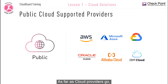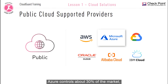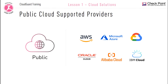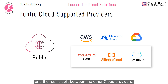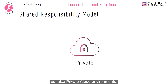As far as cloud providers go, AWS dominates 40% of the market, Azure controls about 30% of the market, Google has about 20%, and the rest is split between the other cloud providers. CloudGuard not only protects public cloud environments but also private cloud environments.